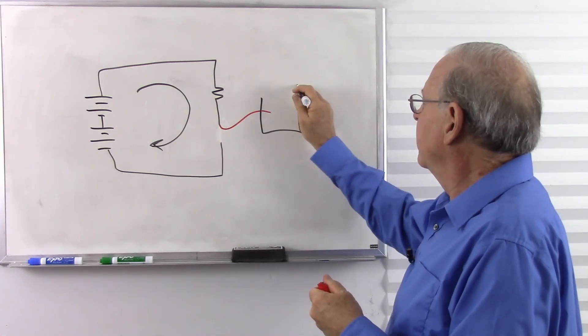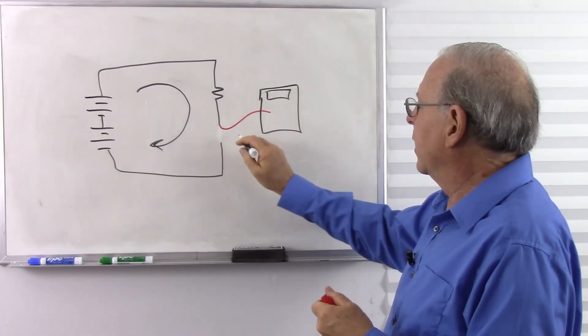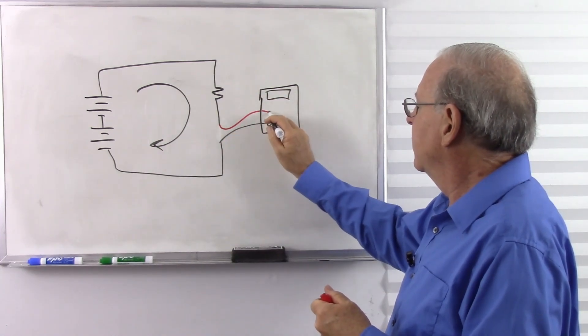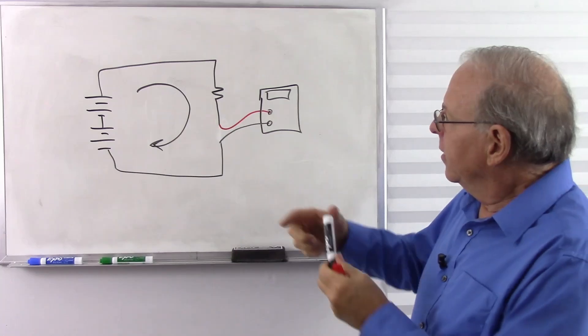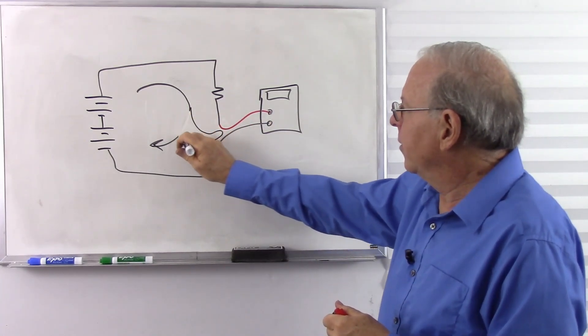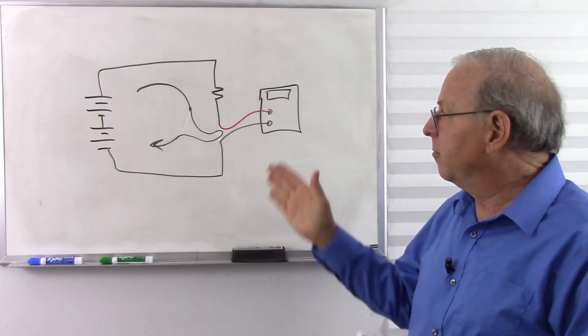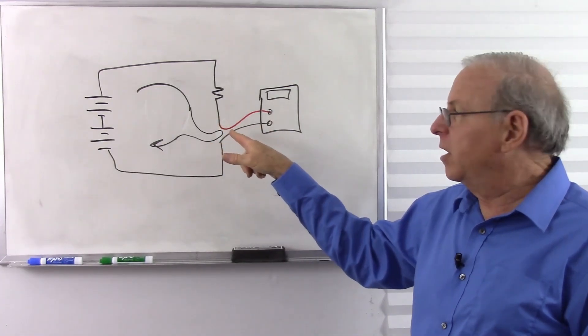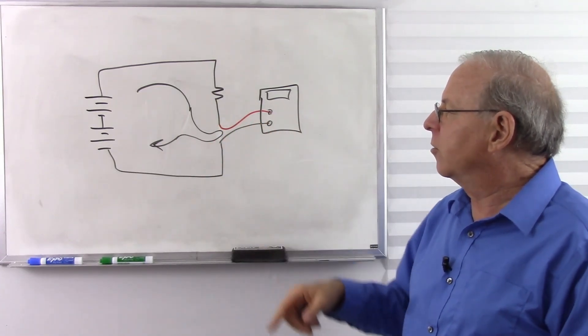So here is our current meter, digital or analog. And so now the current goes through the meter and is now able to measure that. So that's the complication of measuring current, is we have to go actually through the meter.